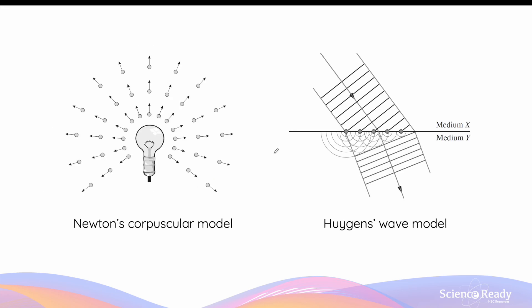A few hundred years ago, Newton proposed his corpuscular model of light, whereby he describes light as consisting of small particles which he called corpuscles, traveling in straight lines with rectilinear velocity.